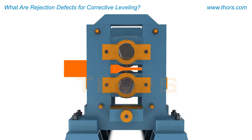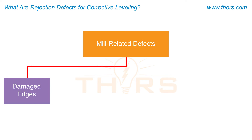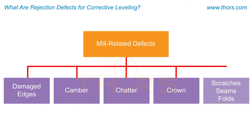Mill-related defects occur at some point during the hot rolling or cold rolling processes. These defects may include damaged edges, camber, chatter, crown, and a variety of scratches, seams, and folds.